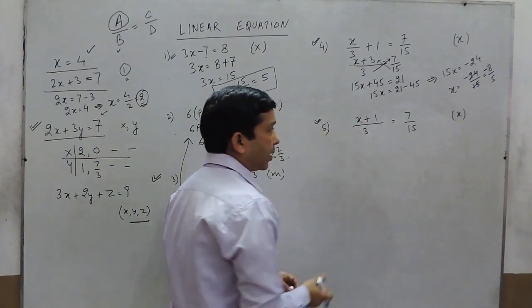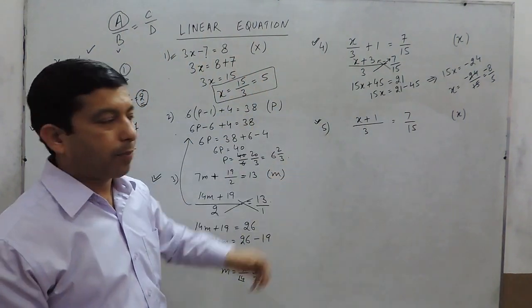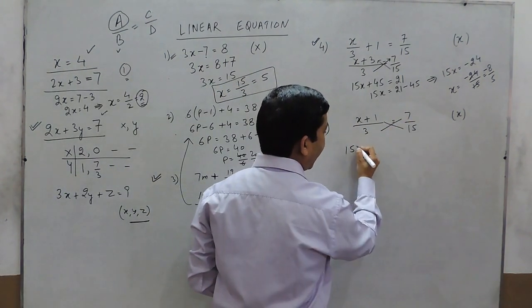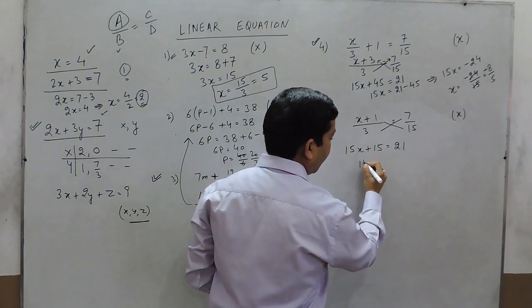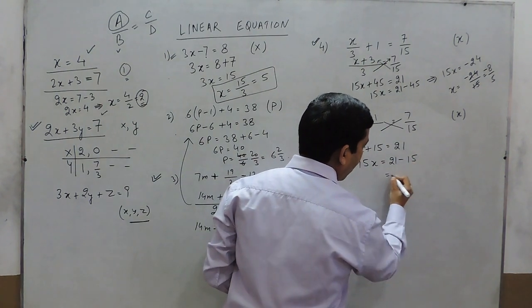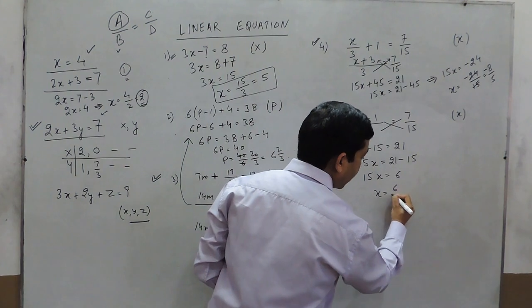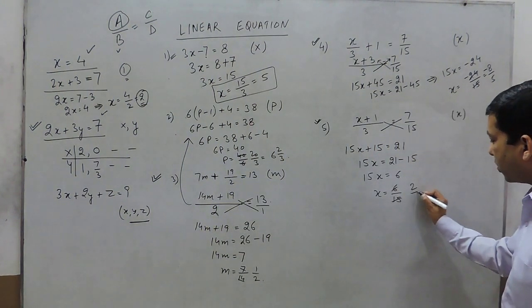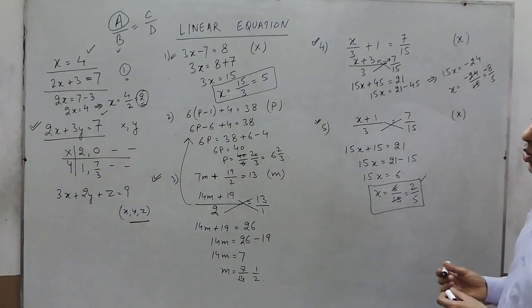In this question it is already in the format a upon b equals c upon d, so we can directly cross multiply. It gives 15x plus 15 equals 21, so 15x equals 21 minus 15, meaning 15x equals 6. The value of x becomes 6 upon 15, which simplifies to 2 upon 5.